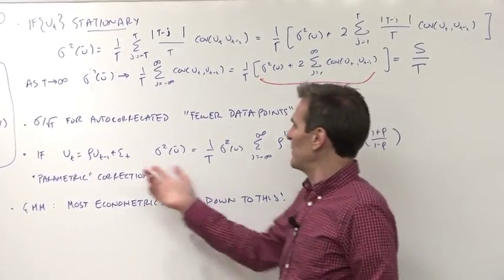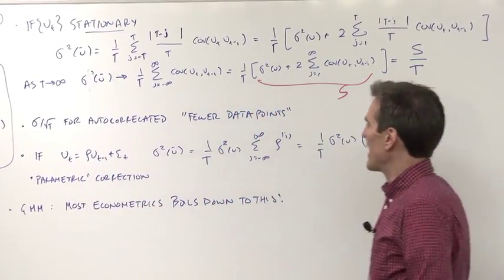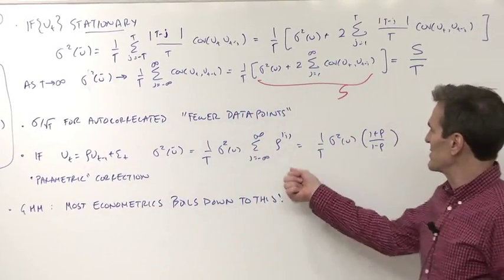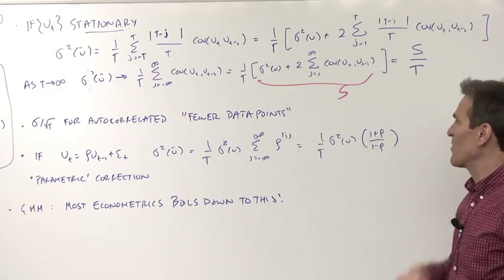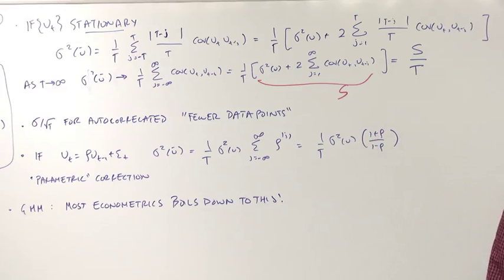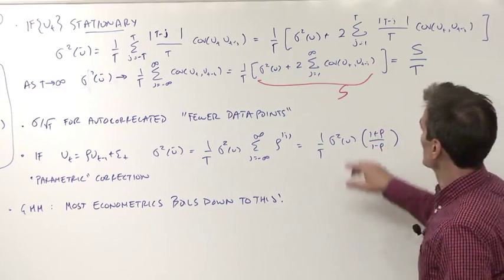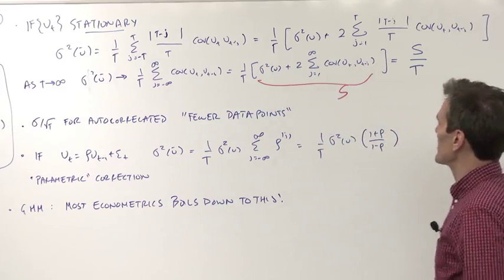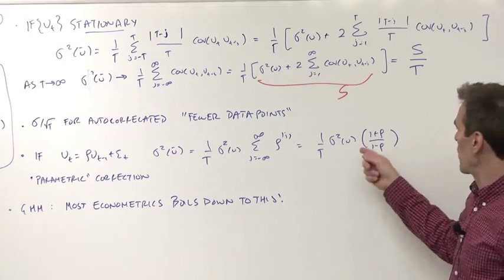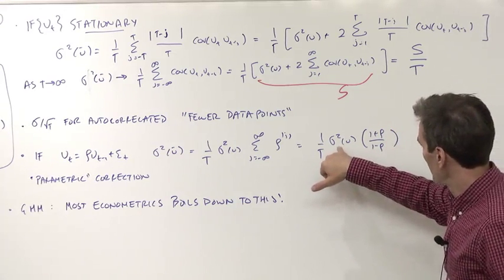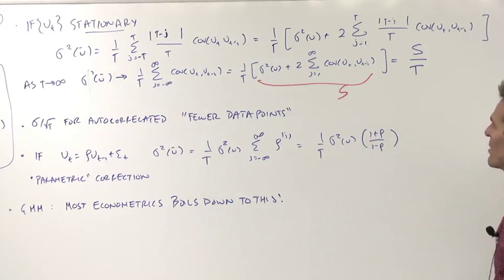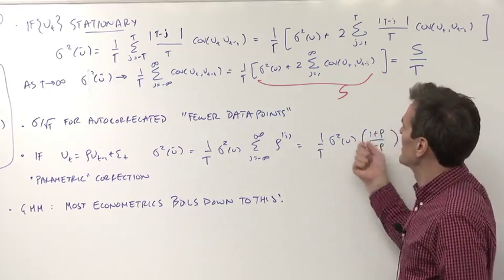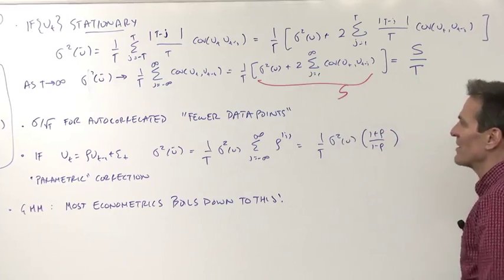As an example, suppose that the errors are auto-correlated with an AR1. Then this is just the sum of the auto-correlations, which you can work out is 1 plus rho over 1 minus rho. I kind of like that. If I want to do this in practice, rather than having to estimate a bunch of auto-covariances, I just estimate one and then in place of our friend sigma squared over root t, sigma squared over t, I have just this correction with the auto-correlation coefficient. That's a nice way of doing it parametrically. That's called a non-parametric correction.